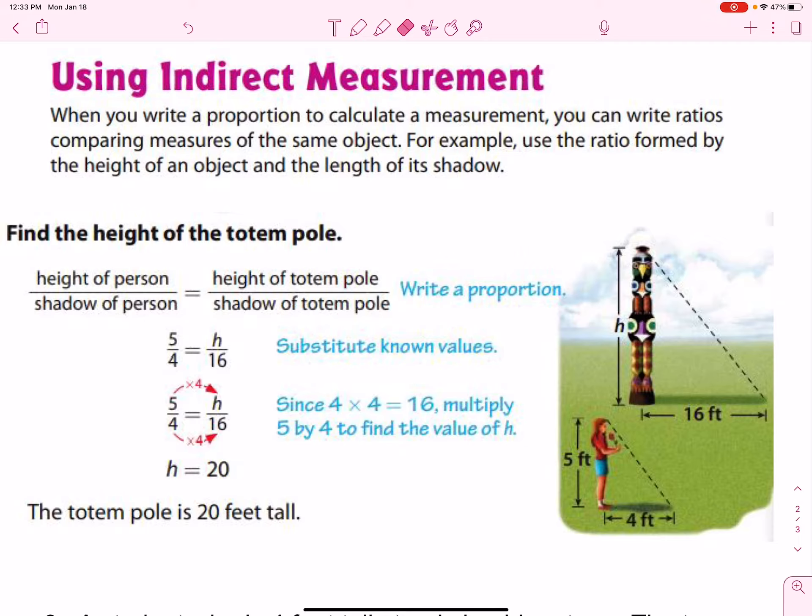So, one of the ways that we incorporate this into the real world is using a shadow to calculate the height of something that is really too tall to realistically measure. We can use comparisons of known items.